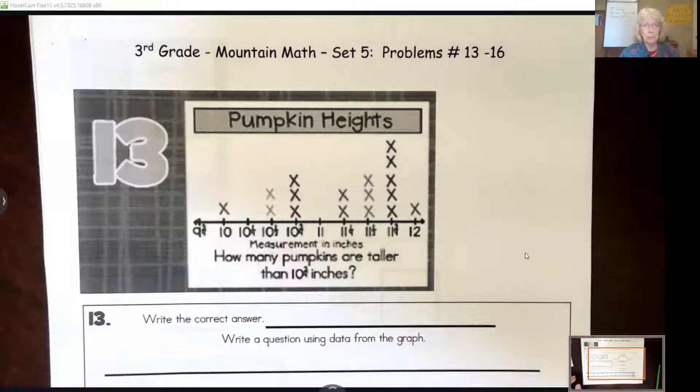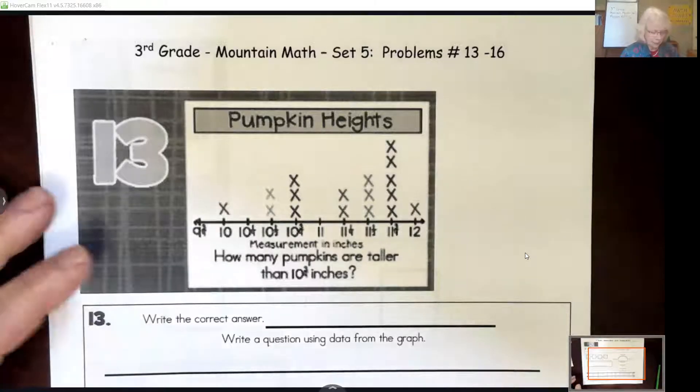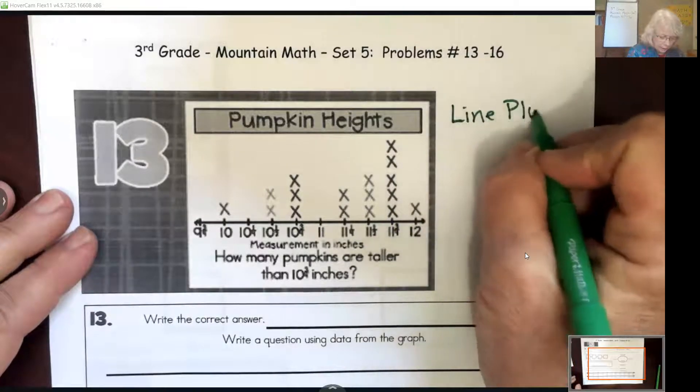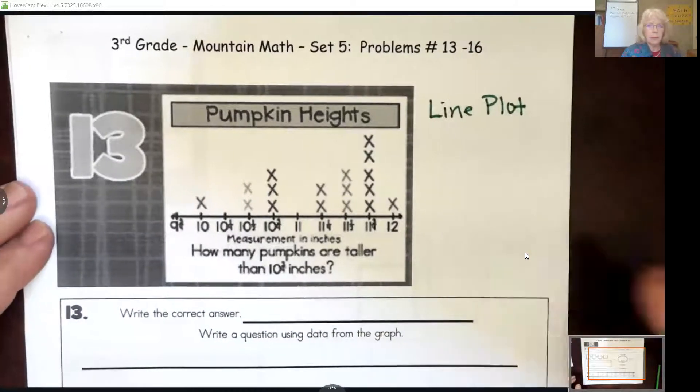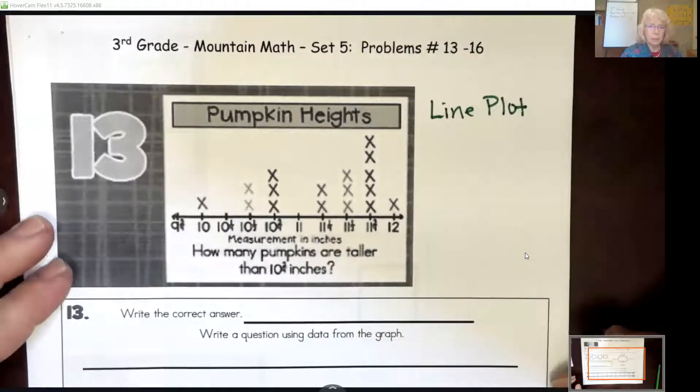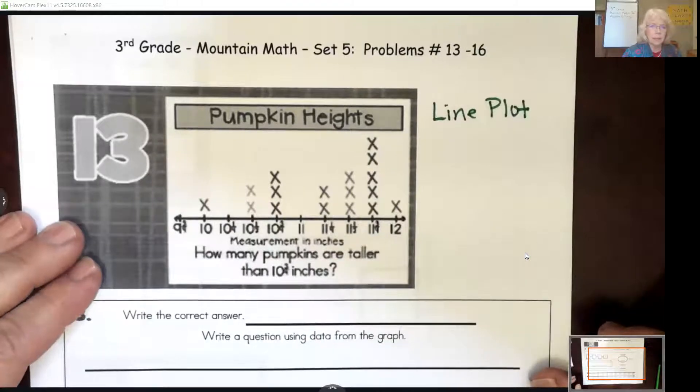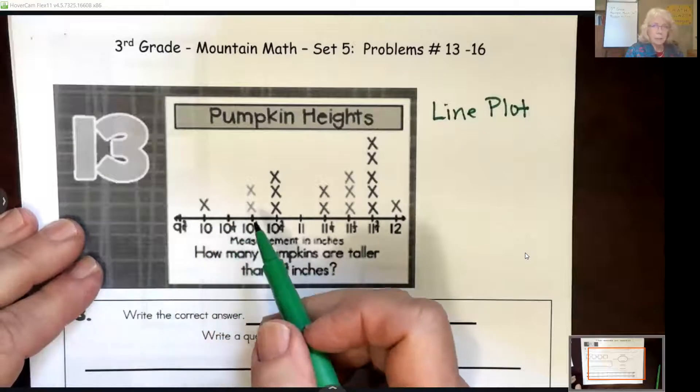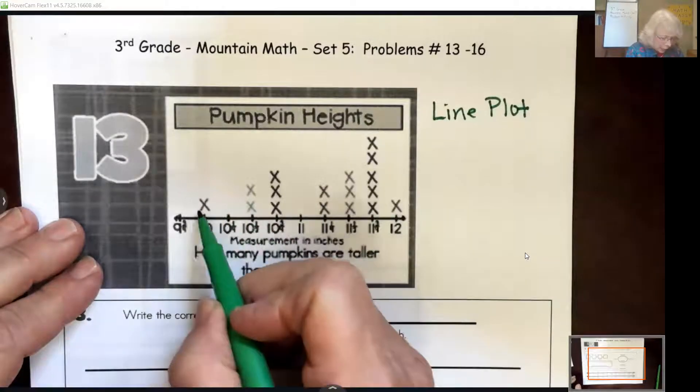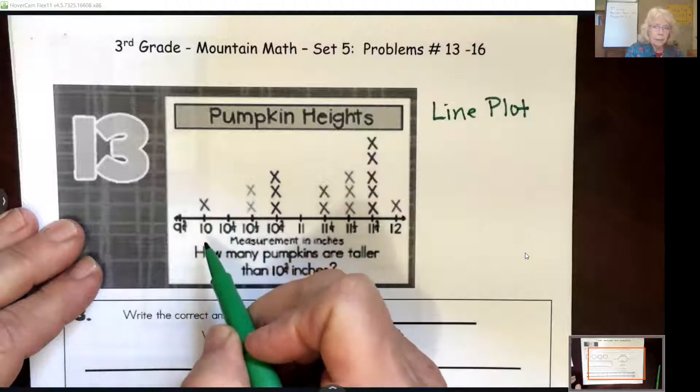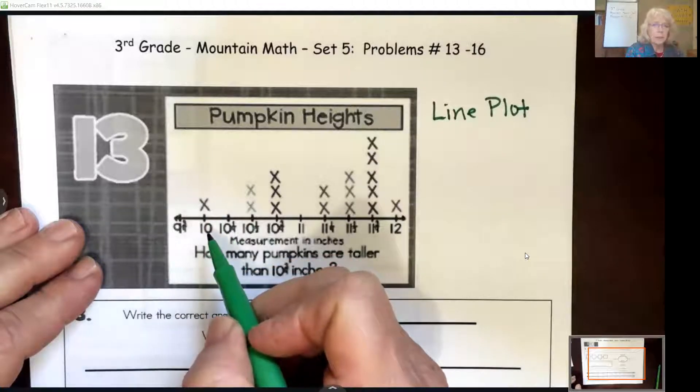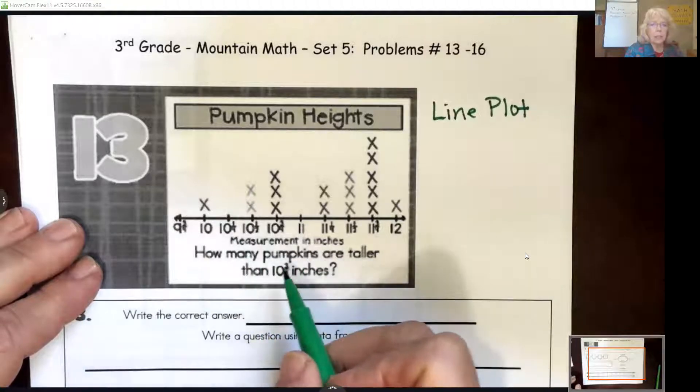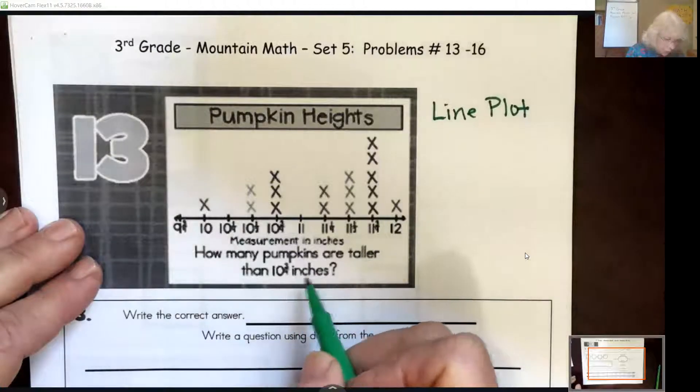So here we go, this is problem 13 called pumpkin heights. This is what we call a line plot. So a line plot is a way of capturing a lot of information. In this case it's giving us data on a bunch of different pumpkins. Each X stands for one pumpkin and this X means this pumpkin was ten inches tall.